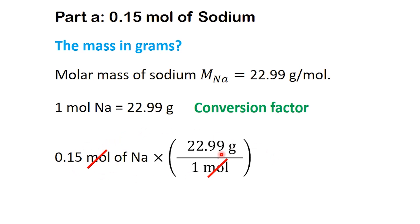Here's how it looks. The unit mol cancels, and we're left with grams, just like we want. Now multiply: 0.15 times 22.99 equals 3.45 grams. So 0.15 moles of sodium equals 3.45 grams.